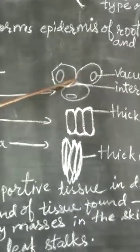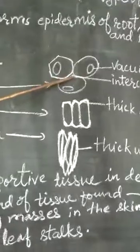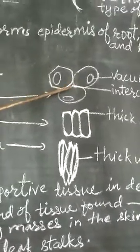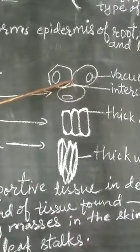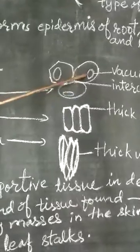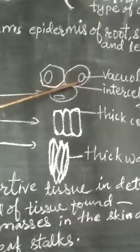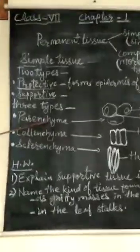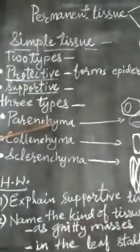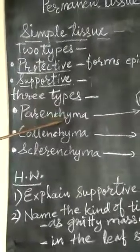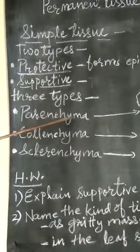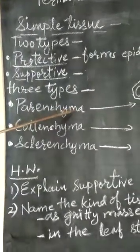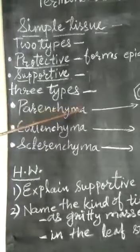The main function of parenchyma cells is to provide temporary support and storage of food. This tissue can be present in the soft region of plants like stem, leaf and root.